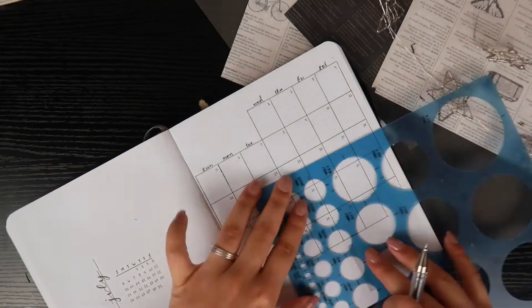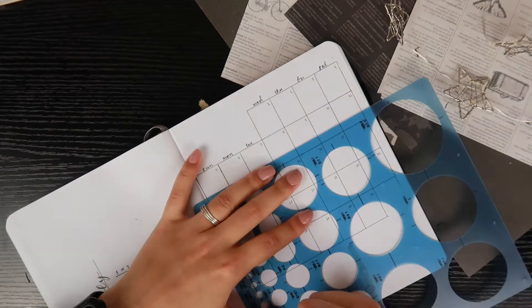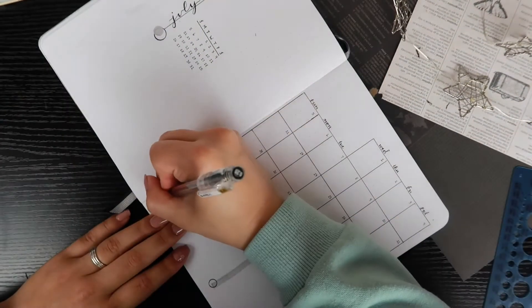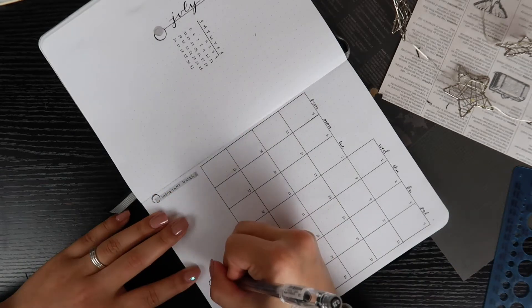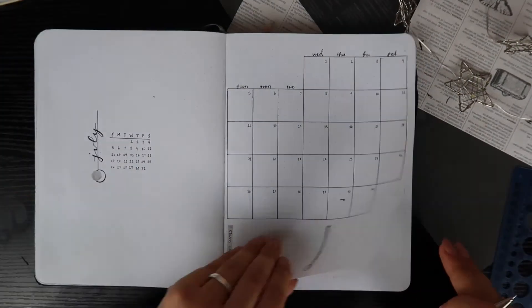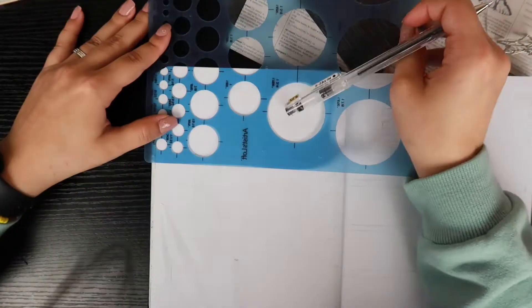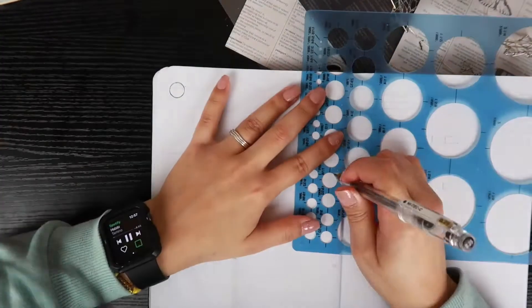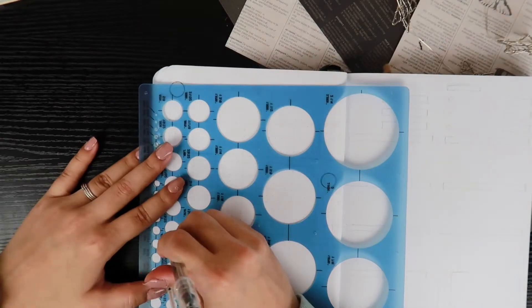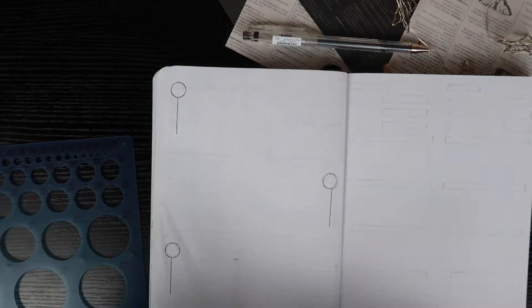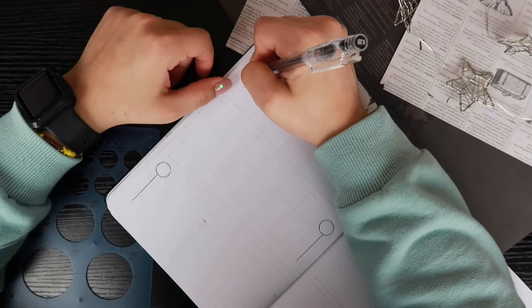Again I'm sticking with the same circular theme going on at the bottom. Here I made two sections for important dates and ideas that I may have throughout the month. Like my last month spread, I had a section for books, TV shows, and movies, and I wanted to include that again because I really liked it and used it a lot. It's just a nice way to have everything that I've consumed throughout the month in one centralized place.